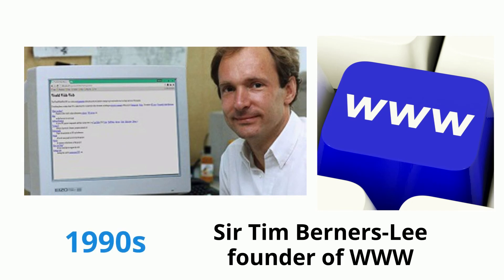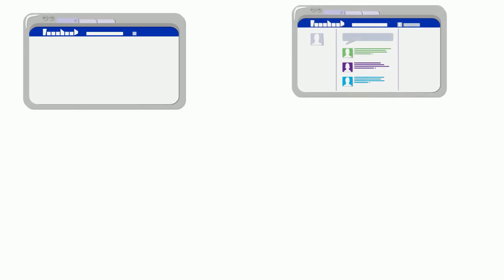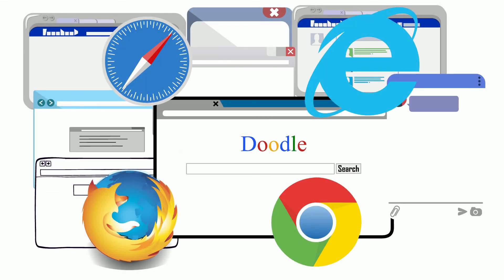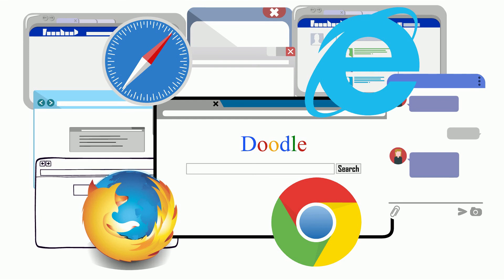In the 1990s, a scientist took the internet to the next level by creating something called the World Wide Web. This gave regular people like you and me a way to connect to the internet, by inventing internet basics like webpages, hyperlinks, and internet browsers. This cosmetic change unlocked the internet to the public, who could now surf the web for the very first time.